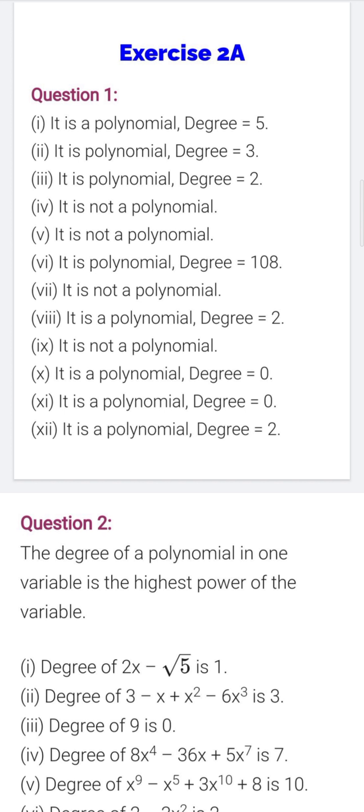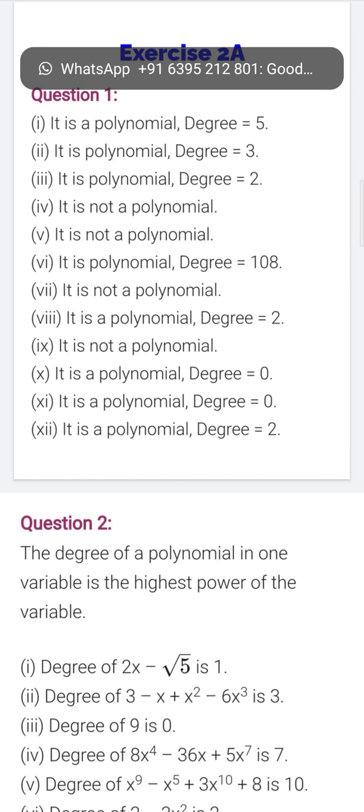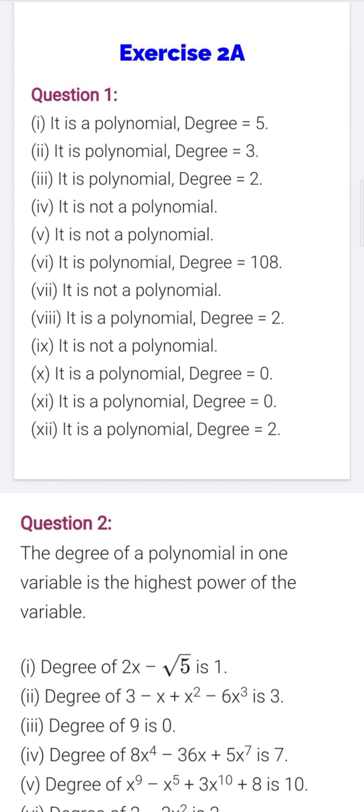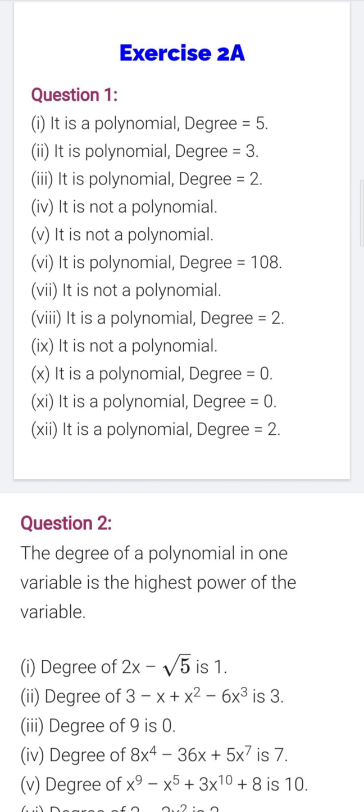Now come to the third part. The third part is given as t square minus 2 upon 5t plus root 2. So 2 upon 5, which is the numerical value, is given in fraction, but we see the fraction, it is just the power of variable. So if you observe the variable, in the first term the variable is t square, and the second term the variable is t. So we can say that it is a whole number power. So it is a polynomial of degree 2, the highest power.